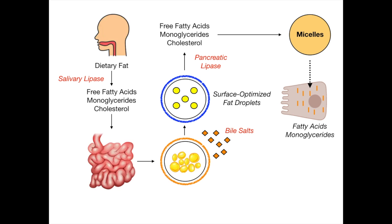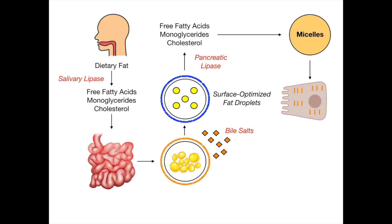The micelle enters the enterocyte — technically what it's doing is releasing fatty acids and monoglycerides into the enterocyte. These little components represent fatty acids and monoglycerides, and the micelle is literally just dumping them into the enterocyte. They diffuse through the enterocyte wall, and now they are finally inside the small intestine — they've been absorbed. At this point, these free fatty acids and monoglycerides are going to assemble. They've made it all the way into the enterocyte despite facing salivary lipase, bile salts from the liver, and pancreatic lipase from the pancreas. The free fatty acids and monoglycerides are going to assemble into triglycerides.